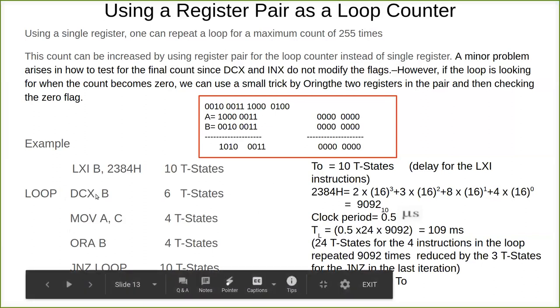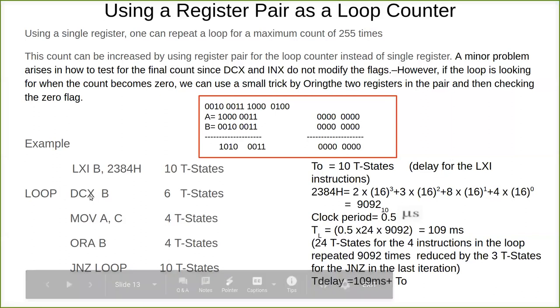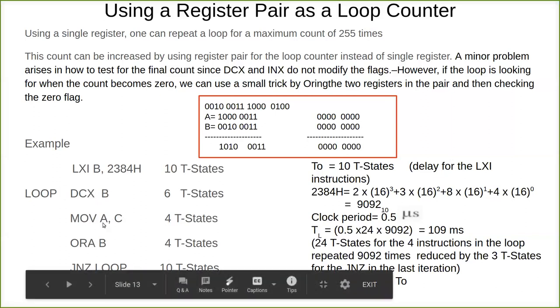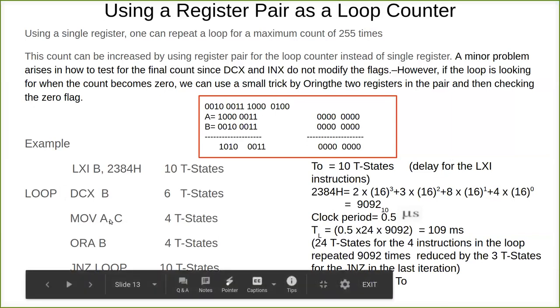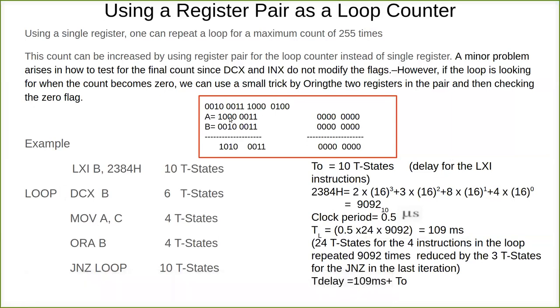Each time after decrement, the value in C register is moved to accumulator. Because almost all the operations are with single bit registers only, not with a dual. So what happens? We move the value C to A.